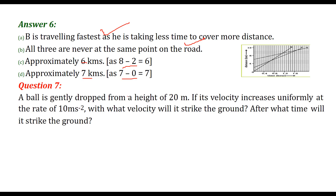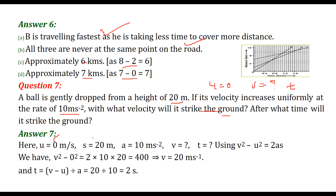A ball is vertically dropped from a height of 20 meters. Since it starts from rest, u equals 0. The acceleration is 10 meters per second squared. Using v squared equals u squared plus 2as, with u equal to 0, s equal to 20, a equal to 10, we get v equal to 20 meters per second. Then using v equals u plus at, time t equals 20 divided by 10 equals 2 seconds.